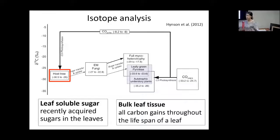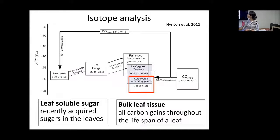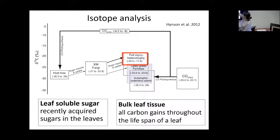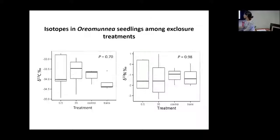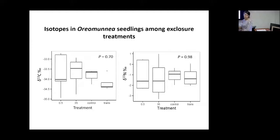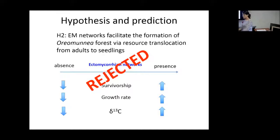The delta-13C carbon and how we can use it as a proxy for connection to mycorrhizal networks: this is the delta-13C in a fully photosynthetic host tree, an autotrophic understory plant, and a fully mycotrophic plant receiving 100% of its carbon from fungi. When we compare among treatments, we found no difference in delta-13C, corroborating our conclusion that there were no mycorrhizal networks operating. We compared the same for delta-15N and found no differences either. Our second hypothesis was rejected — there were no present effects of mycorrhizal networks in our system.